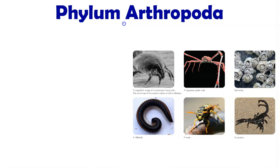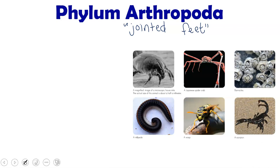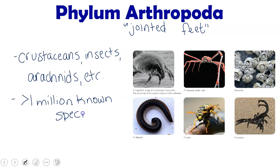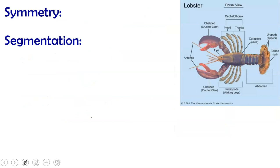It is now time for our lecture on arthropods. The word Arthropoda means jointed feet — 'arthro' is the same root as arthritis, which is inflammation of your joints. Our arthropods include things like crustaceans, insects, arachnids, and more. There are over one million known species of arthropods, and scientists estimate there may be as many as 80 million species of them.